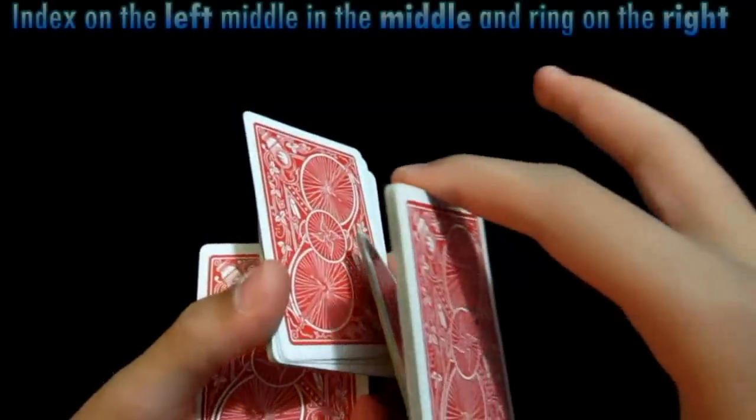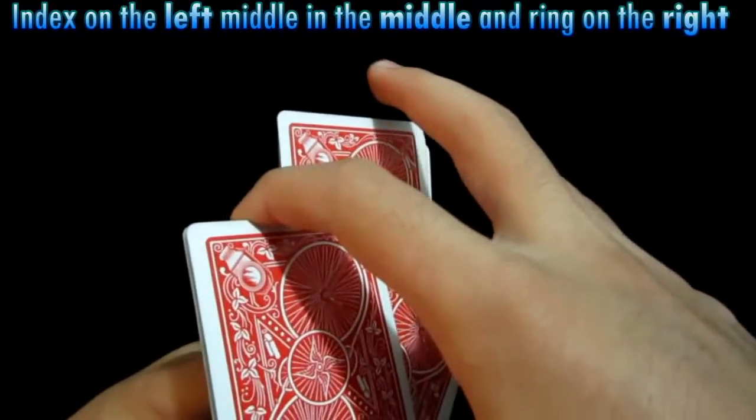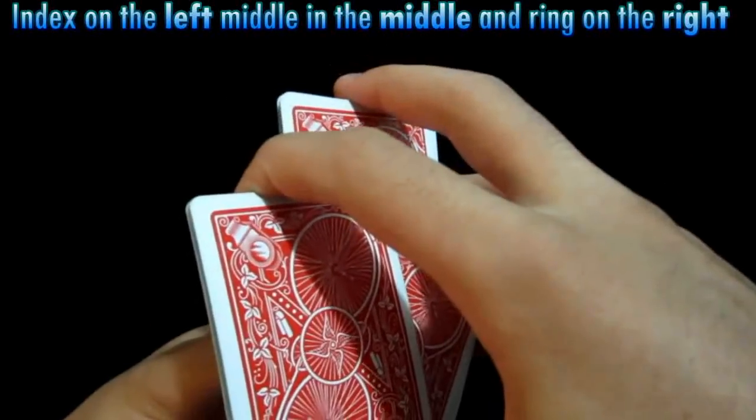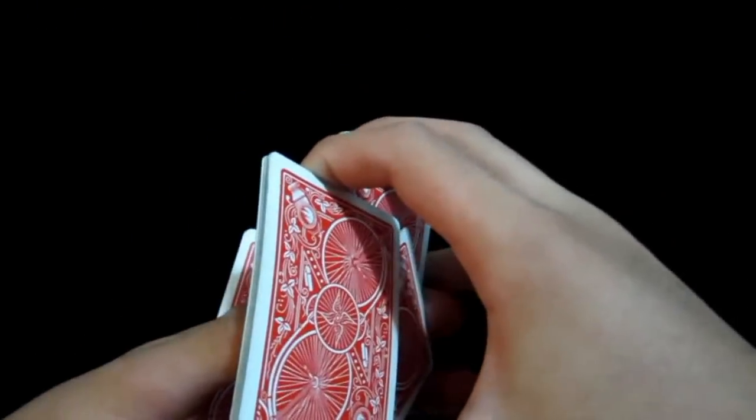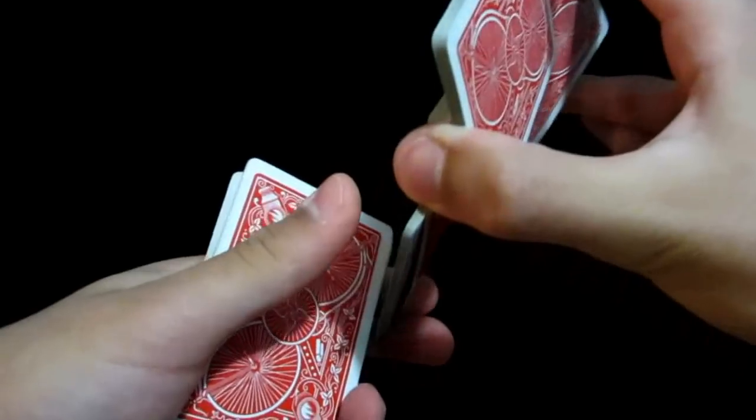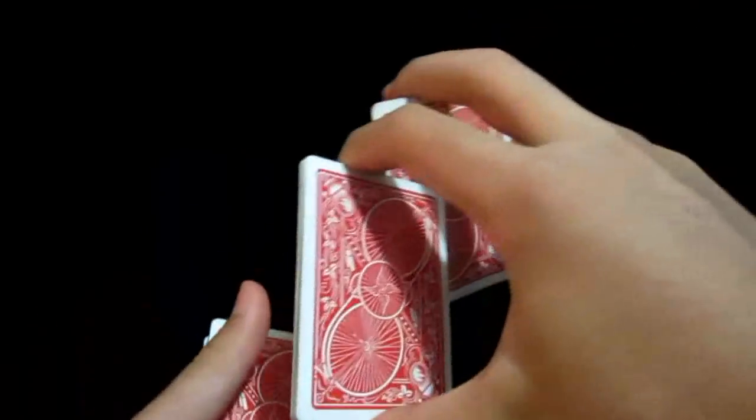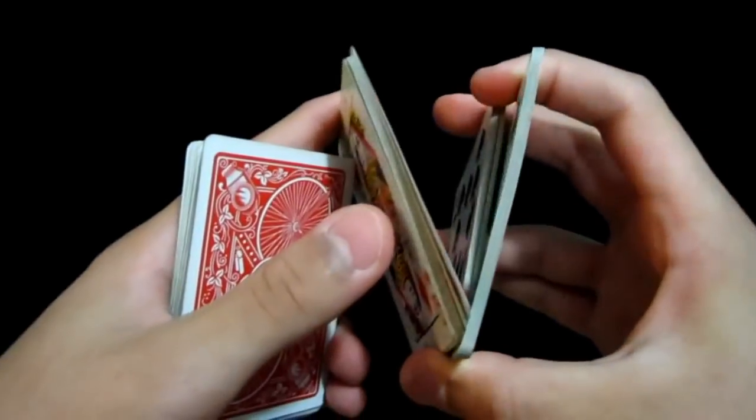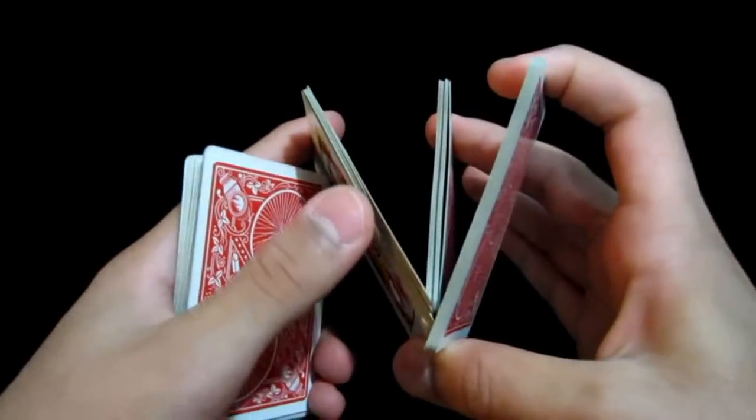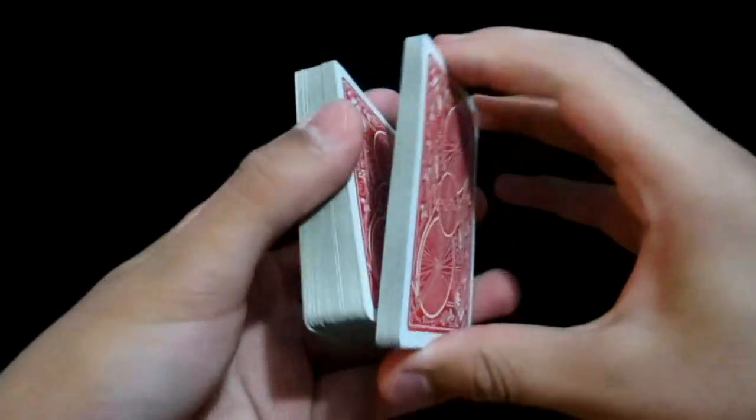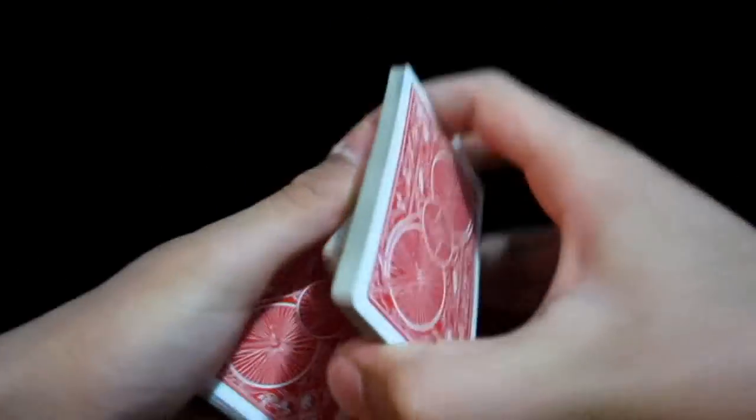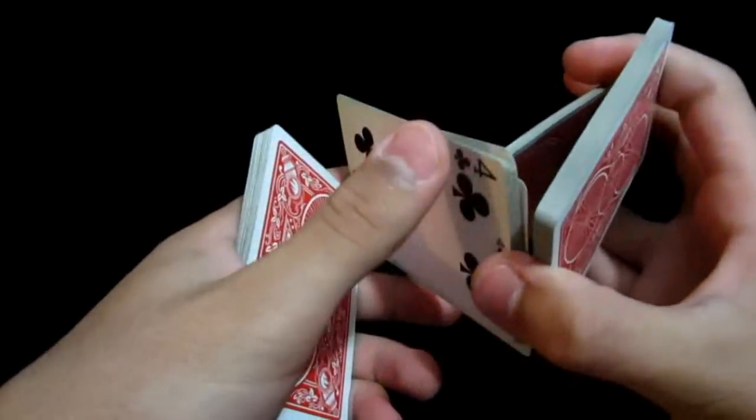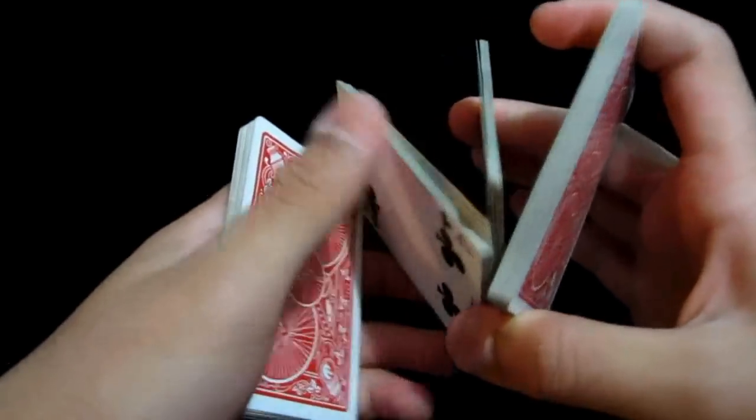Now you're going to come over and grab this packet using your index on the left, middle in the middle, and your ring finger on the right. And you're going to go ahead and pull it, just like that. As you can see, it's now resting between those three fingers and you're going to place it again in the middle. So you go back to your normal position.